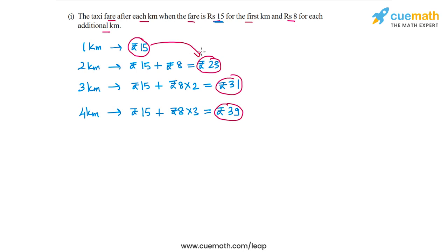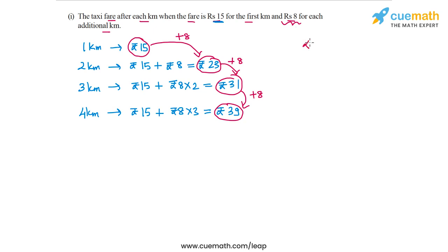For any pair of consecutive numbers, the difference is 8. The difference is +8 because for each additional kilometer, Rs. 8 more is charged. So clearly we get an arithmetic progression in this case, and the reason is that for each additional kilometer Rs. 8 gets added. The difference is constant, and that common difference of the arithmetic progression is Rs. 8. That solves part 1.